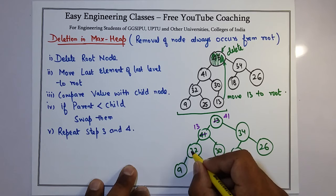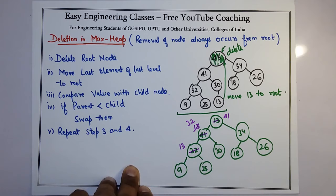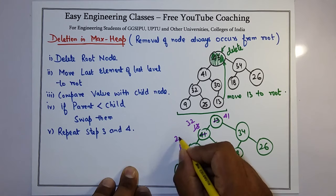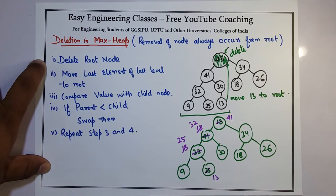Now if we check this again, this will become 13 and this will become 25. Now let's draw the tree after these swappings.